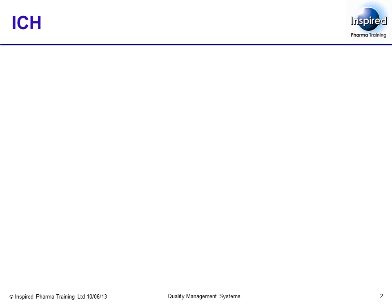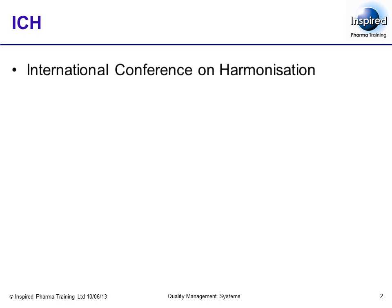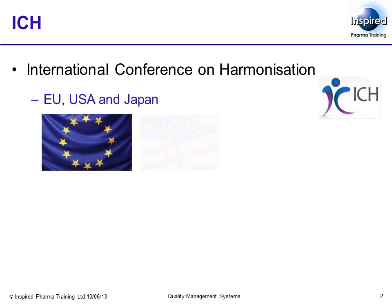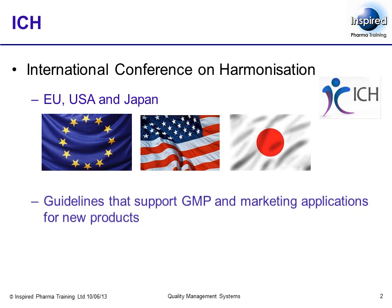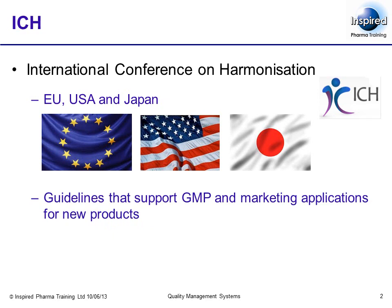The International Conference on Harmonization is a collection of the world's leading regulatory authorities. Sitting on the ICH panel include representatives of the EU, USA and Japan, plus other countries and areas. Historically, the ICH have produced guidelines that support GMP and marketing applications for new products.